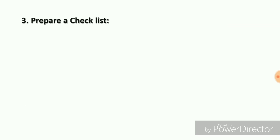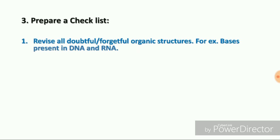The third point is that you have to prepare a checklist. First, revise all the doubtful and forgetful organic structures. For example, in the CSIR exam they can ask what are the bases present in DNA or RNA. There are some purine and pyrimidine bases and their structures also you have to know. You have to know the hydrogen bonding between AT and GC and the thiamine, guanine, uracil base structures you should know.